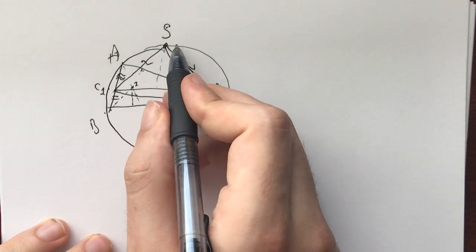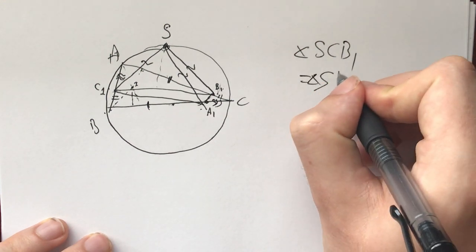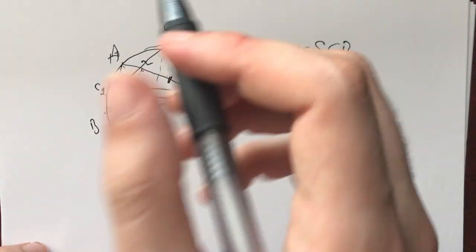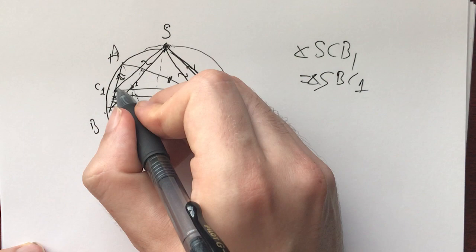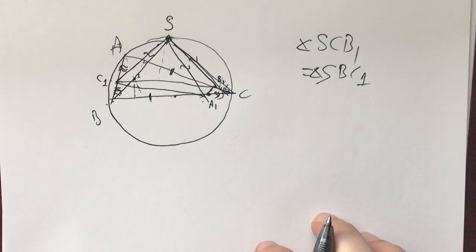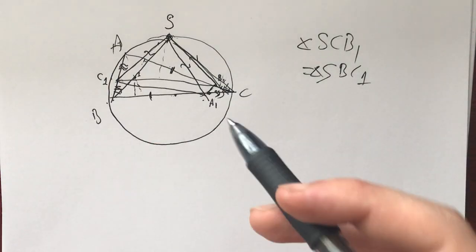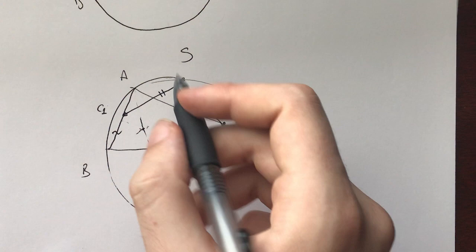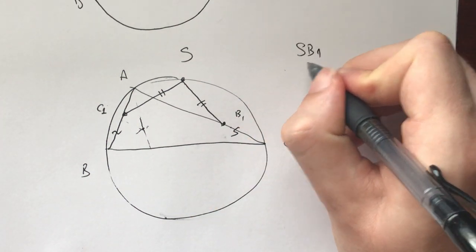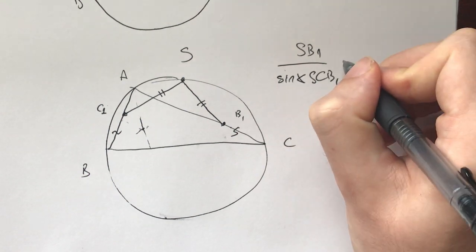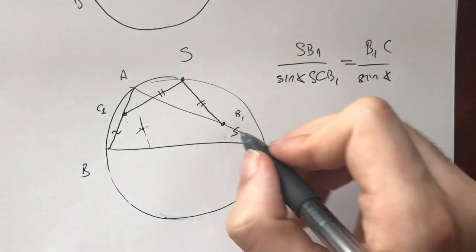When S is on the circumcircle of ABC, we have that angle SCB1 is equal to angle SBC1 — both inscribed with respect to A. We also have two equal sides, but they're not the sides formed by this angle. So are these triangles congruent? We can apply the law of sines: SB1 divided by sin(angle SCB1) equals B1C divided by sin(angle B1SC).